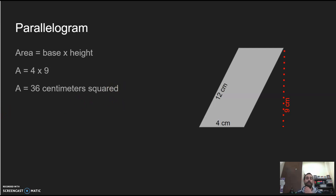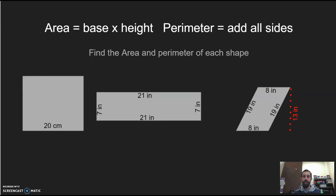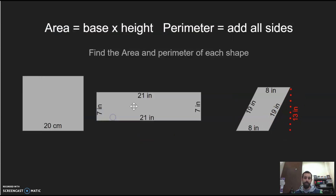Okay, now we are done with team practice and you are going to be practicing on your own for these three shapes. You need to find area using base times height and perimeter by adding all the sides together. Don't get confused — on the parallelogram, the height of 13 inches is not one of the sides. Try it on your own and write it down in your notebook, then we'll check answers.